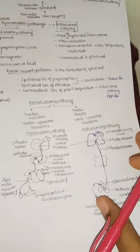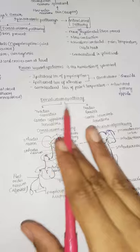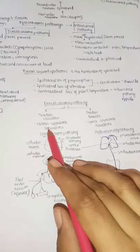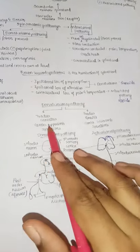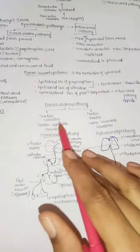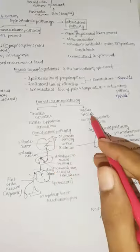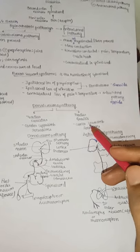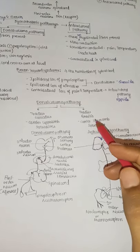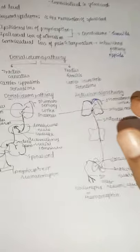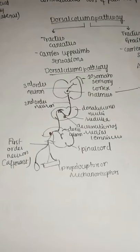The dorsal column pathway has two tracts: tractus cuneatus (upper limb — remember 'eat' with hands) and tractus gracilis (lower limb — like the gracilis muscle in the leg). Tractus cuneatus carries upper limb sensation and tractus gracilis carries lower limb sensation.